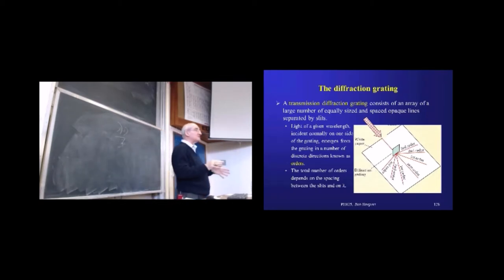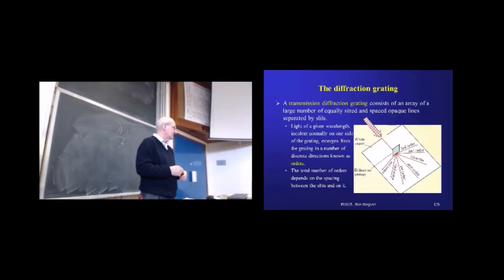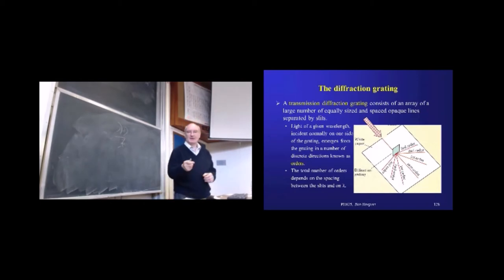Now I'm only going to talk about transmission diffraction gratings, but they actually work in reflection as well. In fact, most instruments that use these things will use them in reflection, just to avoid the absorption of light going through. And what we'll see is that if we put light onto a diffraction grating, and it's normally, that's the way we're going to think about it, so in other words it's coming at right angles to this grating here.